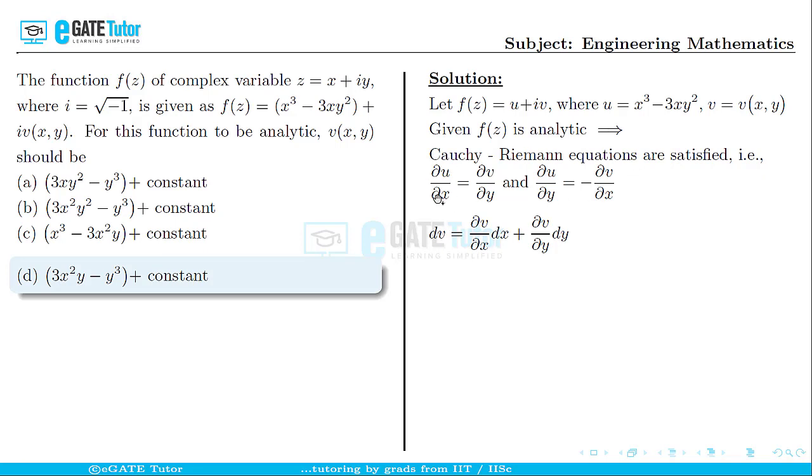Using the CR equations, we can write this equation as dv = -(∂u/∂y)dx + (∂u/∂x)dy. Let's substitute u = x³ - 3xy² in this equation.